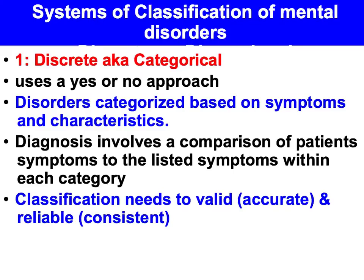There are two major systems of classification of mental disorders: a dimensional approach and a discrete or categorical approach.